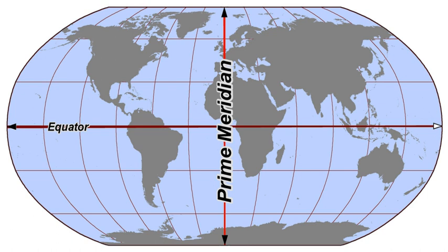North–South: Northern Hemisphere, the half that lies north of the equator. Southern Hemisphere, the half that lies south of the equator.